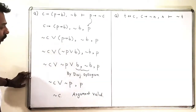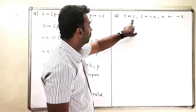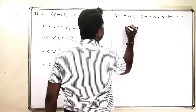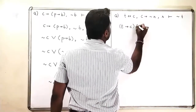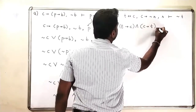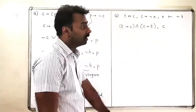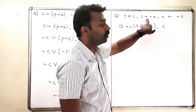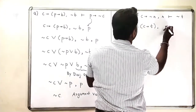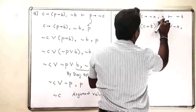Let us go to the second one now. The double implication I will convert into two implications: T implies C, and C implies T. Then I have C implies negation R. This implication converts into a disjunction: negation C or negation R, and then I have R.